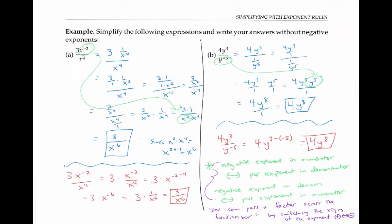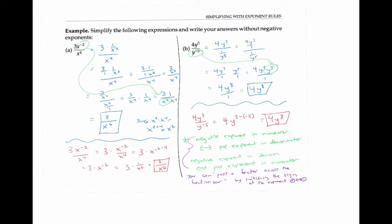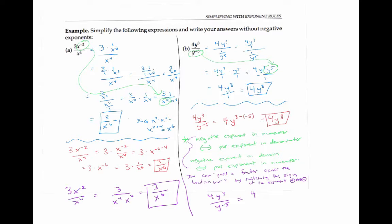Let's see how this principle gives us a shortcut for solving these two problems. In the first problem, 3x to the minus 2 over x to the 4, we can move the negative exponent in the numerator and make it a positive exponent in the denominator, so we get 3 over x to the 4 plus 2, or x to the 6. In the second example, 4y cubed over y to the minus 5, we can change the y to the minus 5 in the denominator into a y to the 5 in the numerator and get the final answer of 4y to the 3 plus 5, or 4y to the eighth.